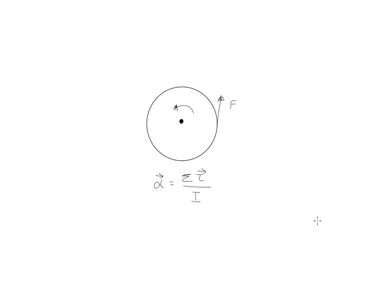Just like how a larger net force exerted on an object will result in a larger acceleration, a larger net torque acting on a rigid body will result in a larger angular acceleration. And just like how a large mass measures how resistant an object is to changing its linear motion, the moment of inertia I measures how resistant an object is to changing its rotational motion. So if I exerted the same net torque on two different objects, the one with the larger moment of inertia would have a smaller angular acceleration.